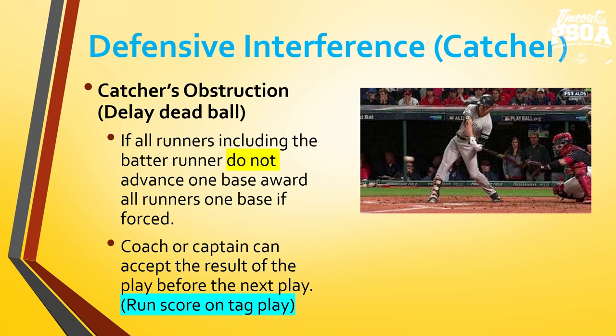The coach or captain can accept the result of the play. They could come out and say, 'We want that run to score — that puts us up by one run.' They could take the result of the play, so we'd call the batter out, ignore the catcher's obstruction, and have that runner from third score. Now the offense is happy. This is where it gets interesting: if the defense then appeals that the runner left early and the umpire calls the runner out, the offense can't go back to the catcher's obstruction. Once they make the choice, they can't change their choice.